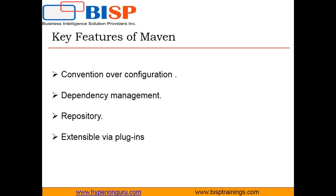A build can include compiling classes, putting all the compiled classes into a package, deploying them on a server, and performing testing. Maven automates all these processes and can build multiple projects together, publish project information, deploy projects, share JAR files across several projects, and help in team collaboration. The second feature of Maven is dependency management — it is possible to define dependencies to other projects during the build. Maven resolves those dependencies and, if needed, also builds the dependent projects.